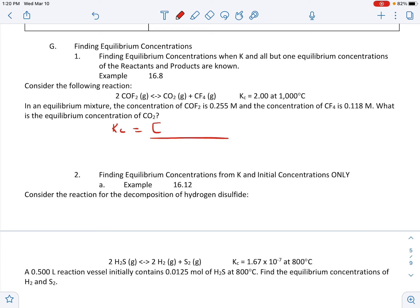We go KC, we set it up products over reactants. We're just going to plug in what we know. We know that the K is 2, so we'll put that there. We know CO2 is what we're looking for. We know CF4 is 0.118 and we know our COF2 is 0.255, but that needs to be squared. We're going to take 2 times 0.255 squared and then divide that by 0.118 and our answer to three sig figs should be 1.10 molar. That's our concentration of CO2. That one is fairly simple, pretty easy to do.